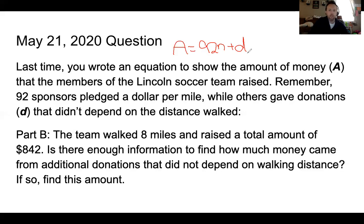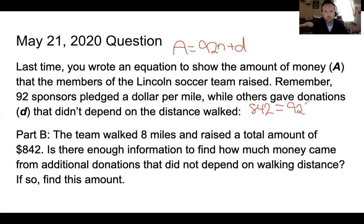For today, Part B asks us: the team walked eight miles and raised a total amount of $842. First, is there enough information to find out how much money came from additional donations that did not depend on walking distance? So we're given the amount: $842 equals 92 times however many miles — in this case it's eight — plus D.